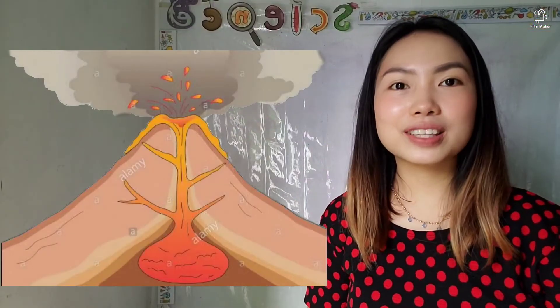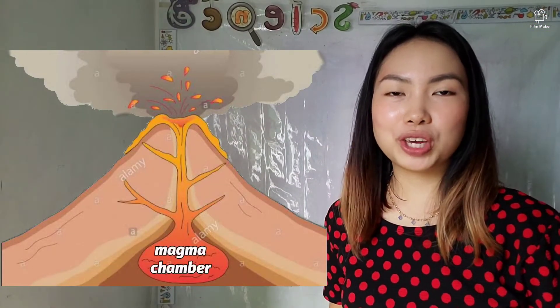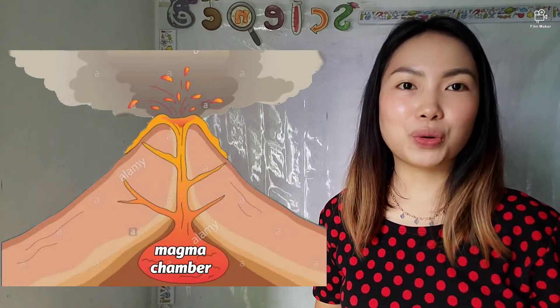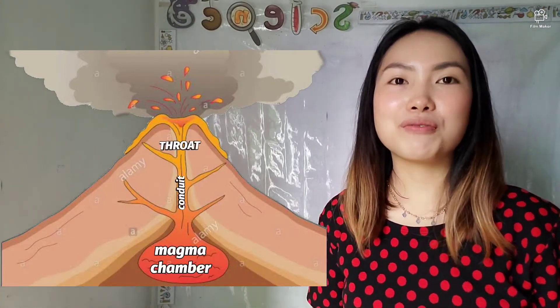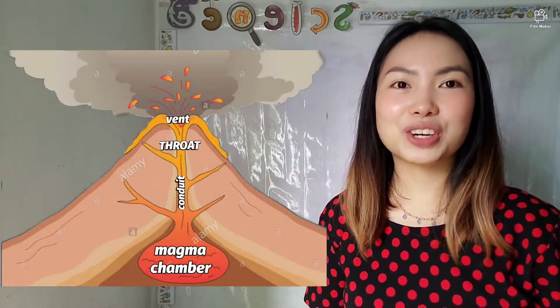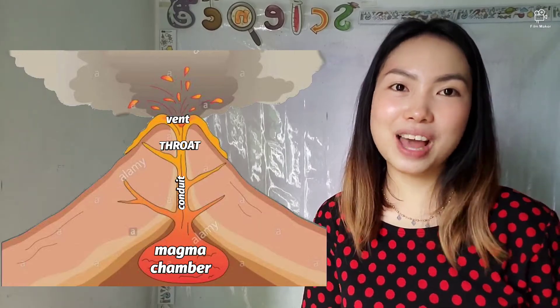These are the different internal parts of the volcano: the magma chamber, the conduit, throat, vent, crater, and lava.